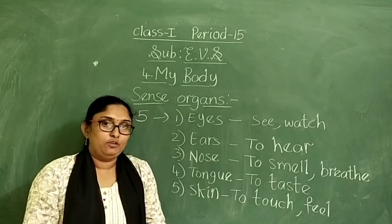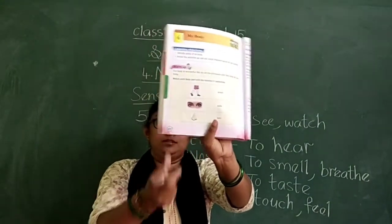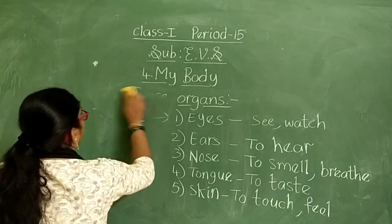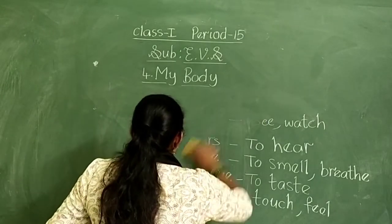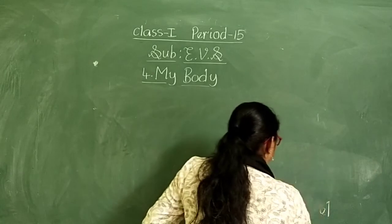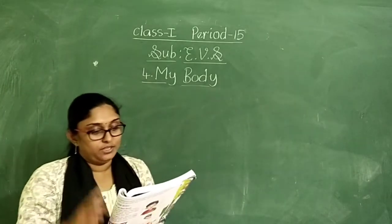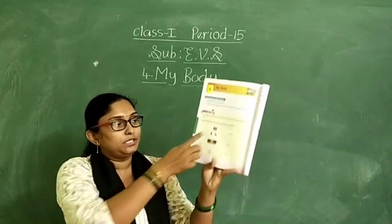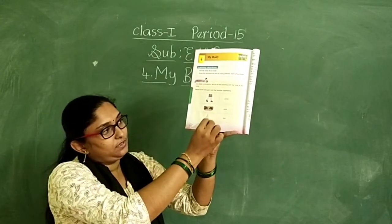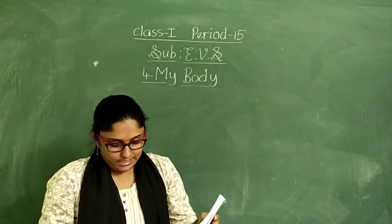Now everyone open your textbook at page number 216. Here, match the body part with the function it performs. Legs we use for walking. Eyes — seeing. Nose — smelling. You have to match it.